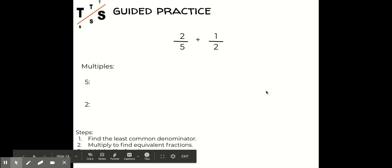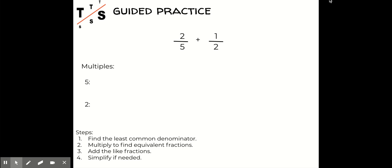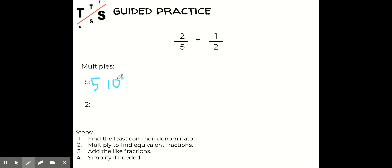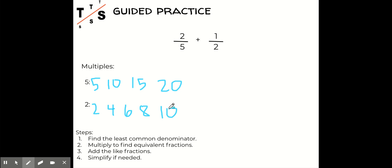Alright, let's try some together. If you'd like to pause and go through it on your own, you can do that. Let's write out multiples for these numbers. Multiples of five: five, ten, fifteen, twenty. Multiples of two: two, four, six, eight, ten. I can stop right there and see that ten is the first number they have in common — it's the least common multiple.